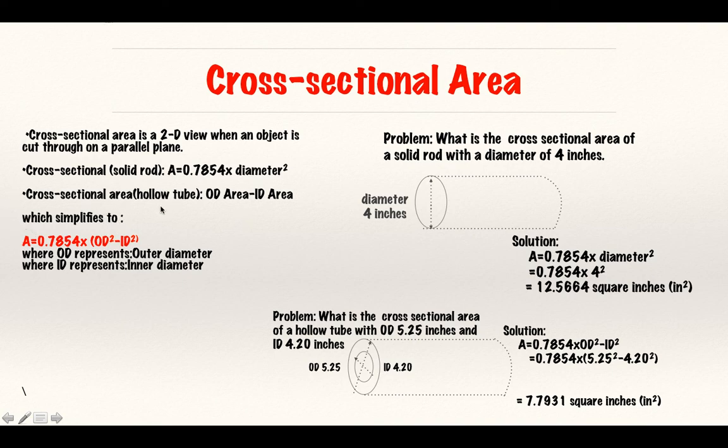The cross-sectional area of the hollow tube is OD area minus ID area, which is the area of the outer diameter minus the area of the inner diameter. I plug in my 5.25, I plug in my 4.20, square both, and I get my answer.